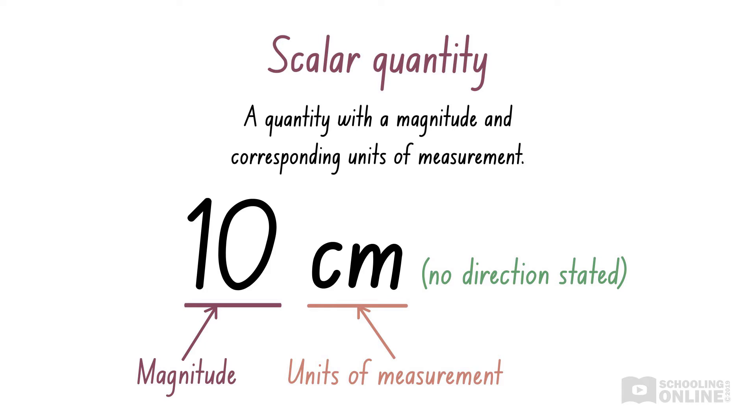This is a quantity that consists of a magnitude and its units of measurement. For example, a distance of 10 centimetres is a scalar. The magnitude, or size, is 10, and the unit is centimetre. Furthermore, scalar quantities do not include a direction. This helps us distinguish scalar and vector quantities, as vectors always have a direction. In this example, the distance 10 centimetres is given without a direction, so it is a scalar.